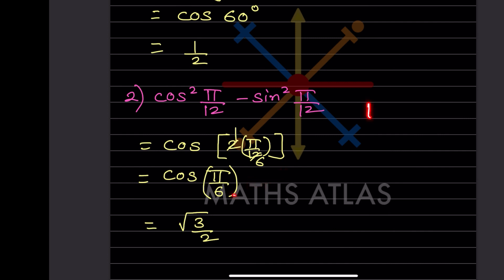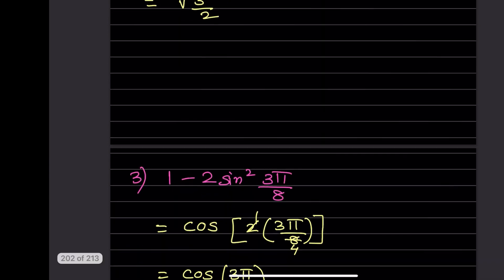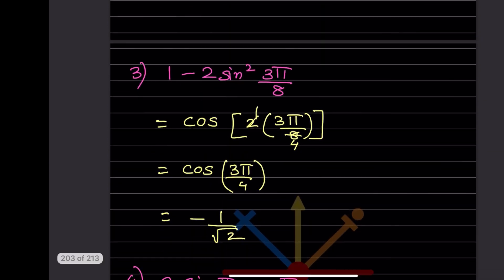Since π/6 = 180/6 = 30 degrees, we evaluate cos30 = √3/2.